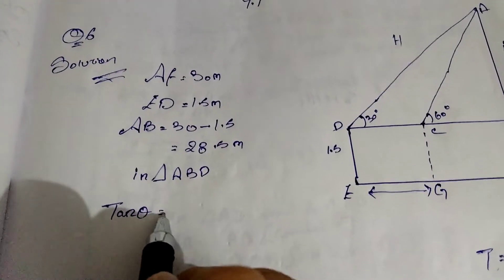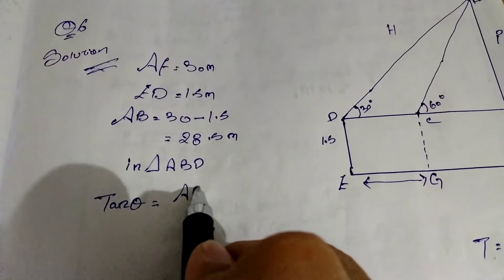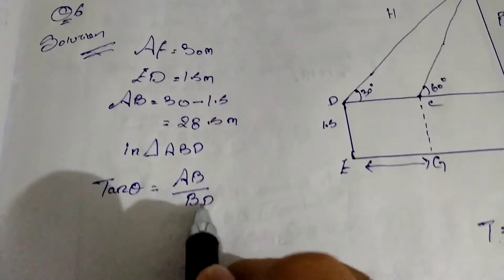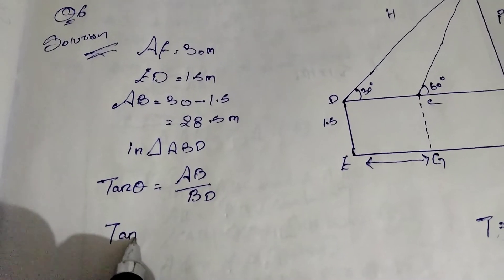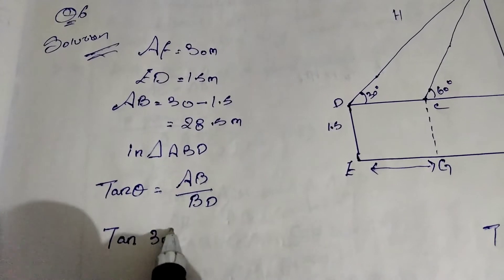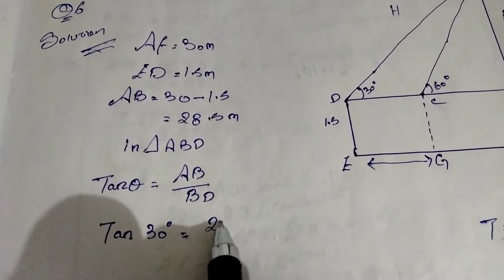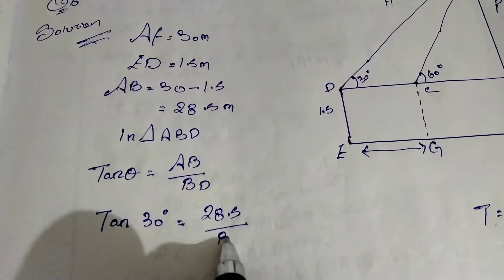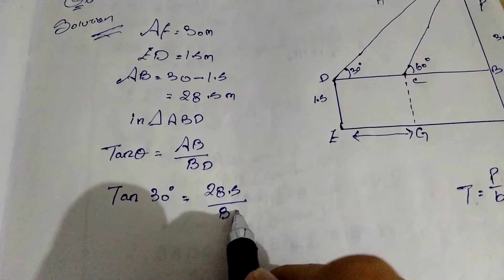So tan theta equal to perpendicular, that is AB, over base, that is BD. So tan 30 degree equals 28.5 over BD. We are going to get BD, the total base.